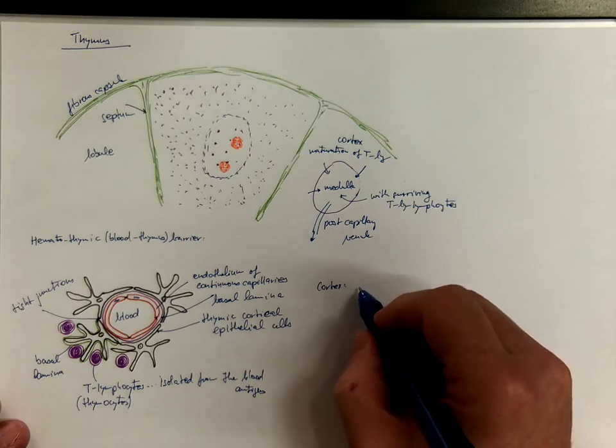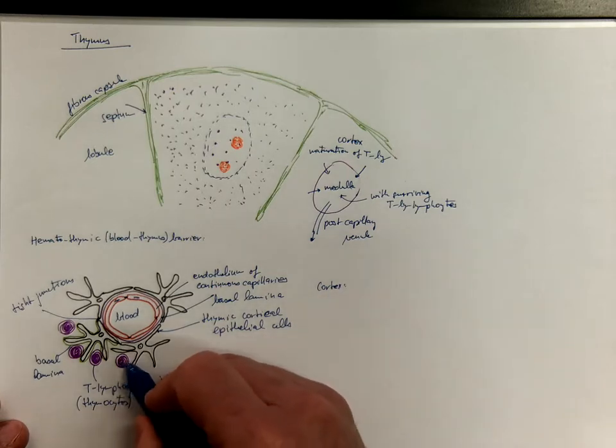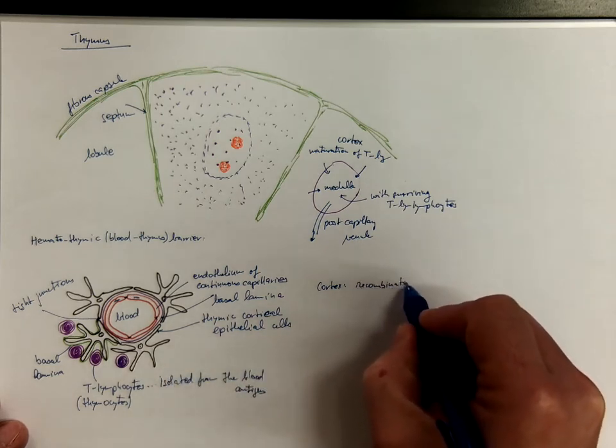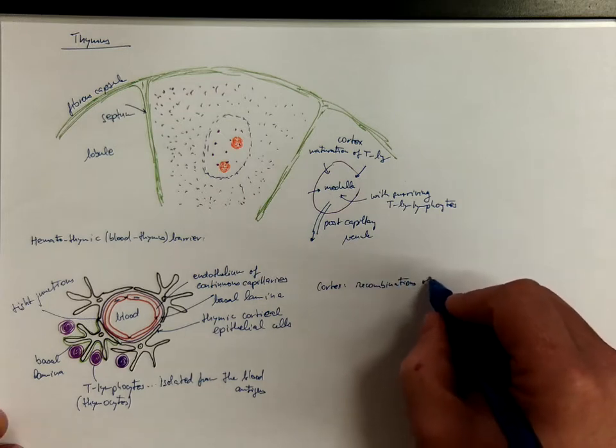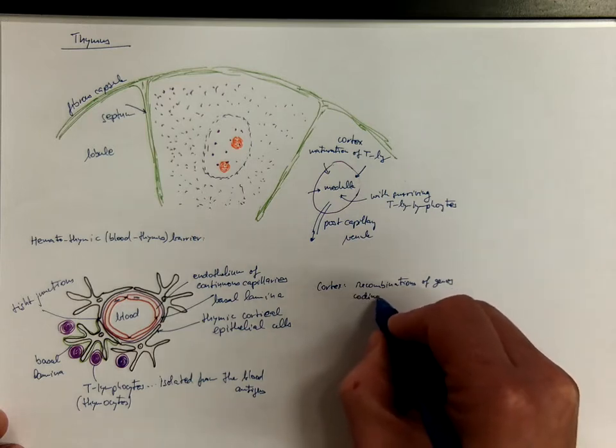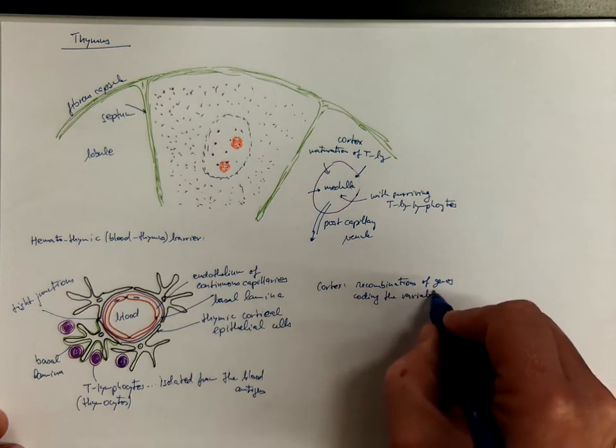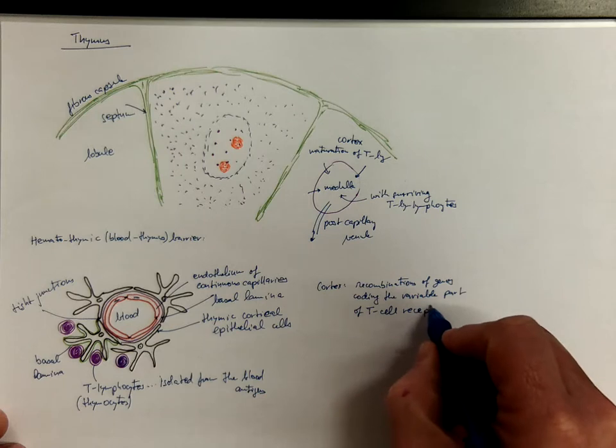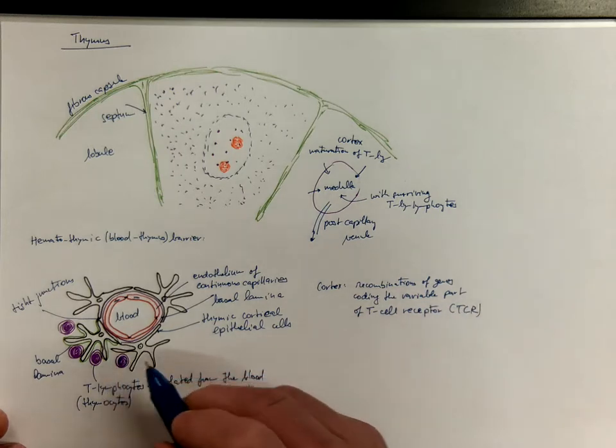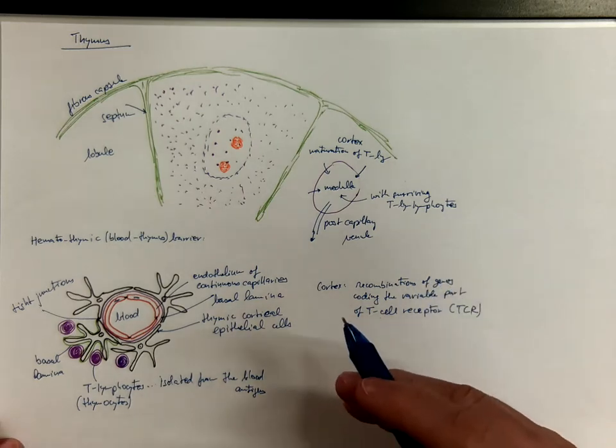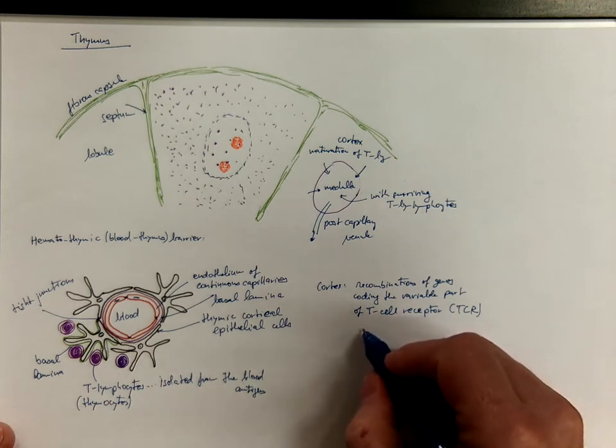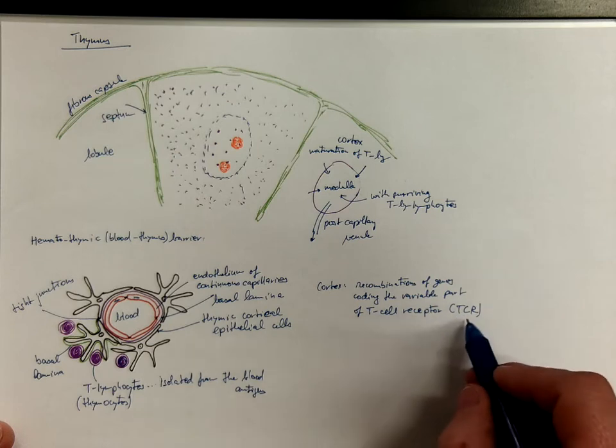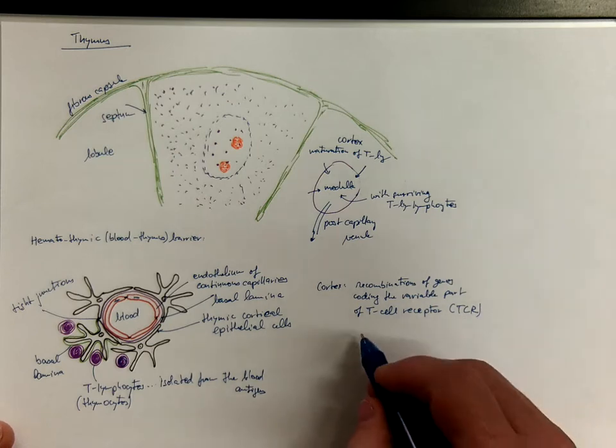In the cortex, the T lymphocytes undergo somatic recombinations or mutations of alleles of the variable part of T cell receptor, abbreviated as TCR. This T cell receptor is by definition the important receptor of T lymphocytes. Random variants of T cells are produced with billions and billions of combinations of various T cell receptors, but there is a selection.